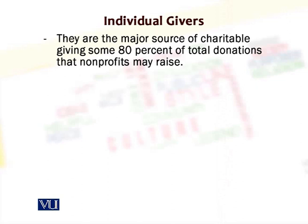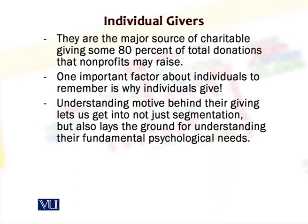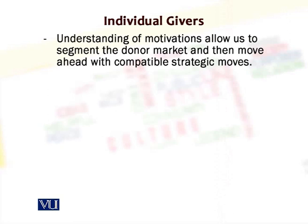We now move on to the next classification, which is individuals. The fact is that individuals could happen to be the largest component of givers among all donors — not corporations, not foundations, and not governments give as much money as individuals do, and this happens to be the case all over the world. People have different kinds of motives before they start considering why, how, and when to donate. The motivational factors are behind donation making, and it is upon the nonprofit to understand all those motivations.